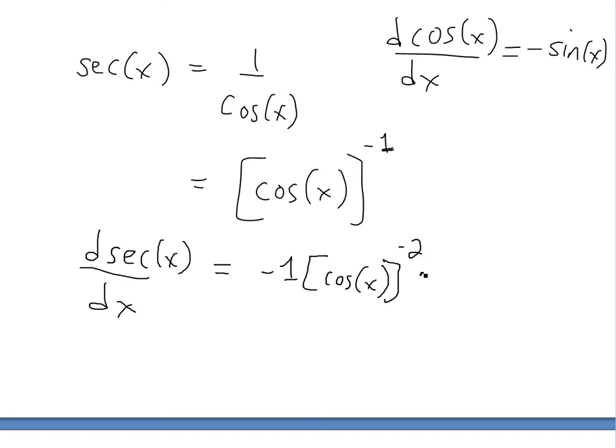Then we use the chain rule, so the derivative of the inside of this power function, which is cosine of x. The derivative of that is just negative sine of x, so we write negative sine of x.